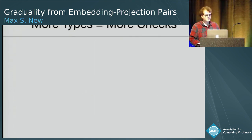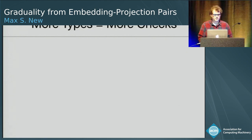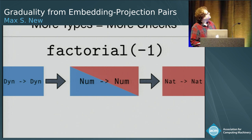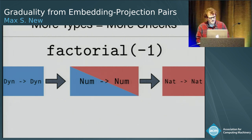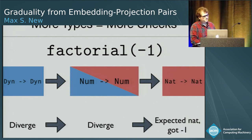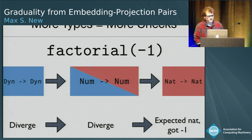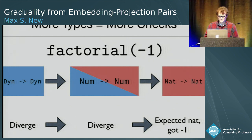Instead, the model is that more typing means more type checking, either statically or dynamically. We'll take a factorial example: maybe we start with the dynamically typed factorial function, then we make it a number-to-number function, and finally we realize it should only take natural numbers. If we apply this function in a dynamically typed setting, for the first two cases maybe it diverges or returns zero — but in the last one, we definitely get a type error: you applied this natural-to-natural function on something that's not a natural number.